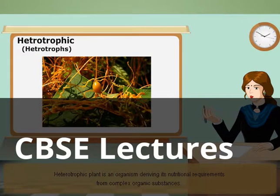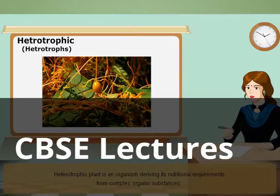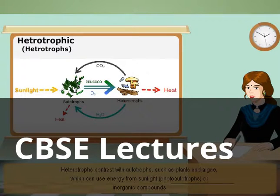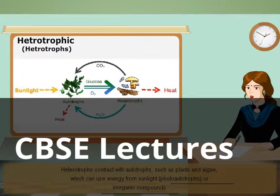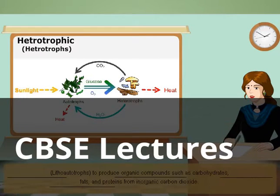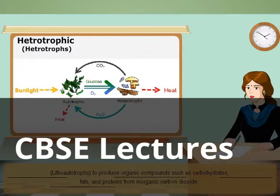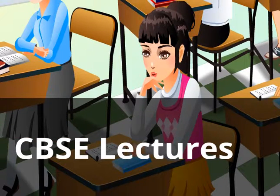Plants are the most familiar type of autotroph, but there are many different kinds of autotrophic organisms. The second is heterotrophic mode. A heterotrophic plant is an organism deriving its nutritional requirements from complex organic substances. Heterotrophs contrast with autotrophs such as plants and algae, which can use energy from sunlight or inorganic compounds to produce organic compounds such as carbohydrates, fats, and proteins from inorganic carbon dioxide.